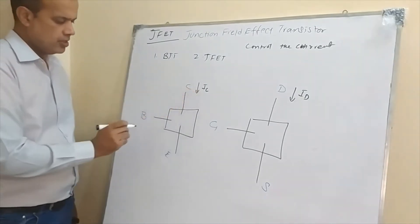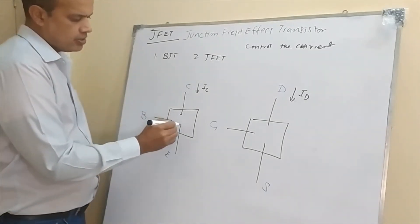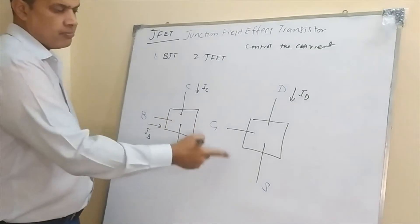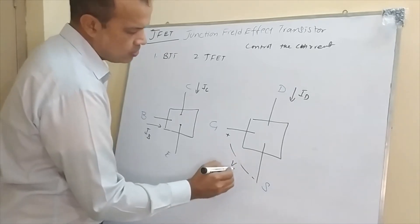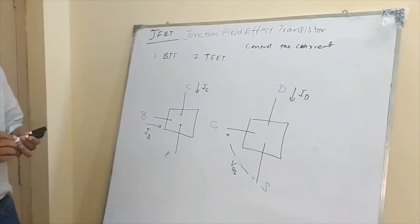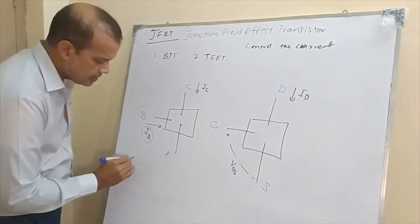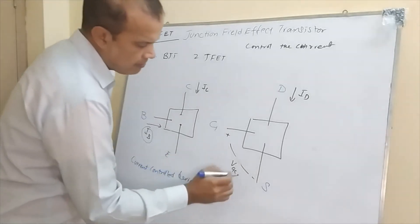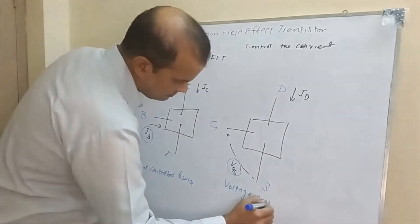In the BJT, we control the output current with the base current — so the base current controls the output current. Whereas in the JFET, the voltage called VGS, the gate-to-source voltage, controls the flow of the drain current. So clearly, in the BJT, a current controls a current, which is why it is called a current-controlled device, whereas in the JFET, a voltage controls the output current, so it is called a voltage-controlled device.